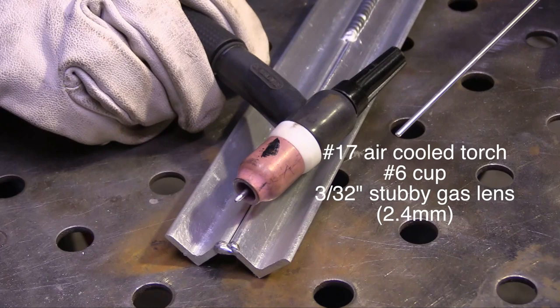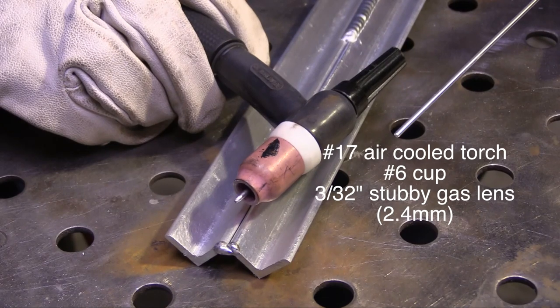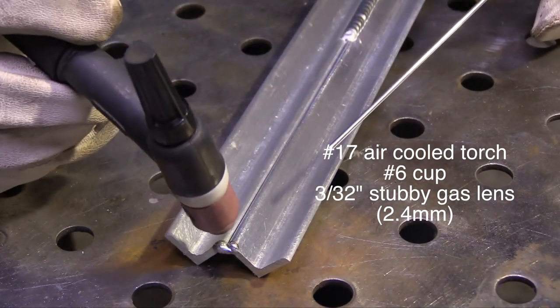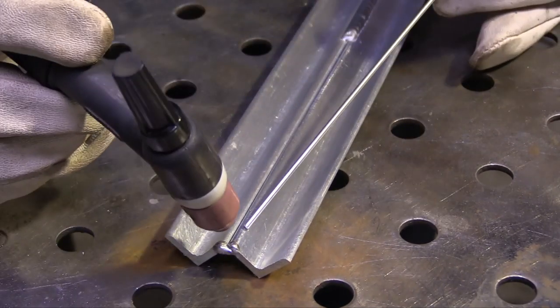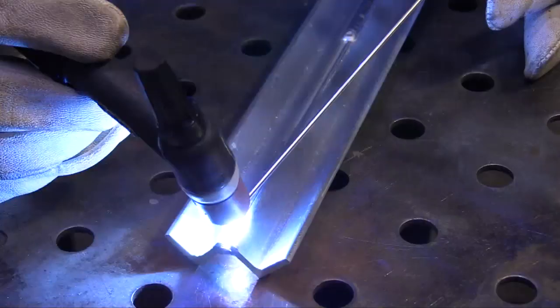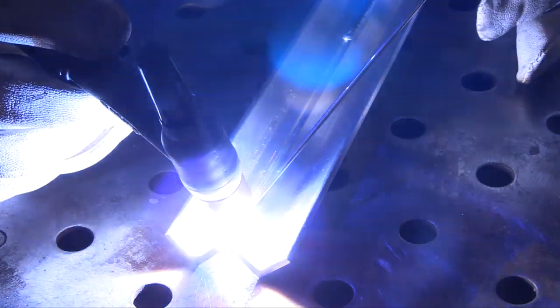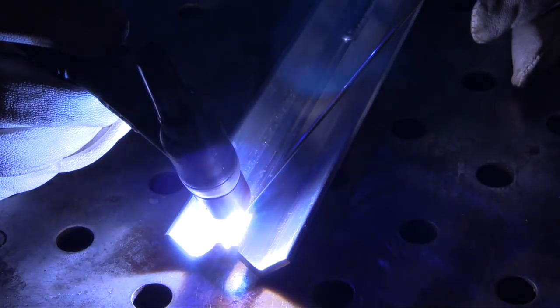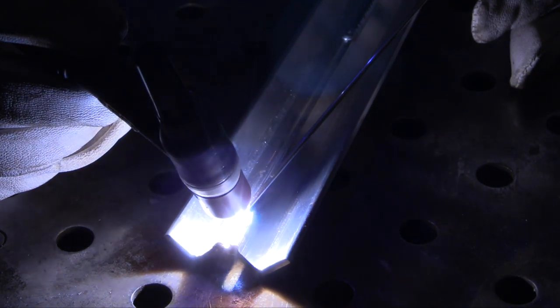I'm using a number six cup with a stubby gas lens here. This is a 17 air-cooled style torch, and that's what I prefer if I'm using a gas lens. Usually with a stubby gas lens I go to a six. It lets me extend the electrode out a little bit further than a standard cup, and that helps with filming.